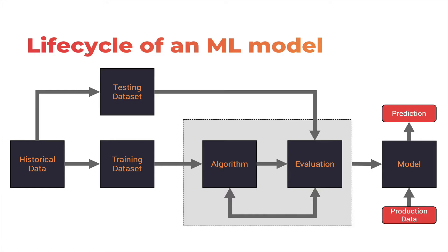A machine learning model has two lives. The first one is all about training, where we take a historical dataset, split that into a training and test dataset, and pass it through a complex algorithm like a neural network to find patterns among the data points. Once the model has been evolved with the right set of parameters and patterns, it is used in production to predict based on unknown, unseen data. When a fully trained model moves from training to production, this is called inferencing, which is the second life of the model.